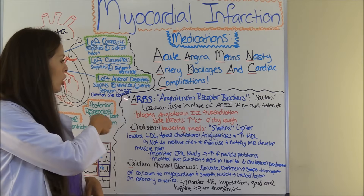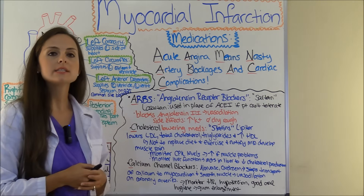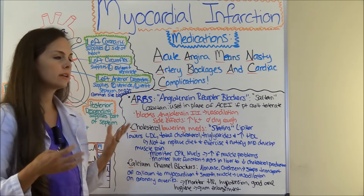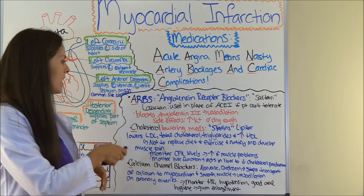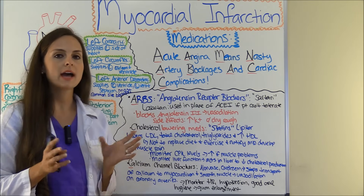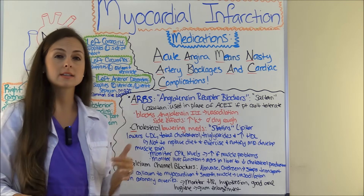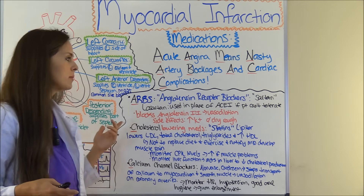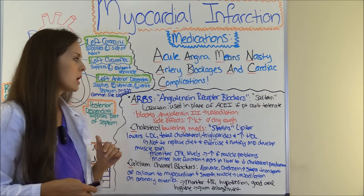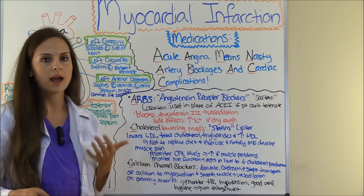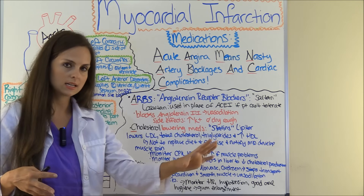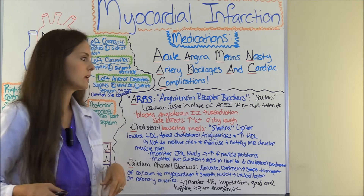Next, A for ARBs — angiotensin receptor blockers — which end in -sartan, such as Losartan. These are typically used in place of ACE inhibitors if the patient can't tolerate them, perhaps due to that nagging cough. ARBs work by blocking angiotensin II, producing vasodilation. Side effects include an increased potassium level, just like ACE inhibitors — however, you do not get the dry, nagging cough.